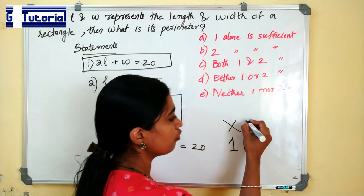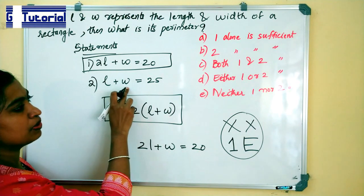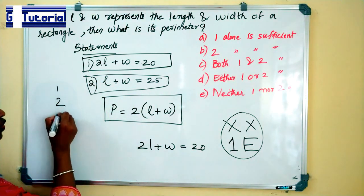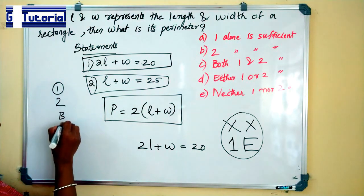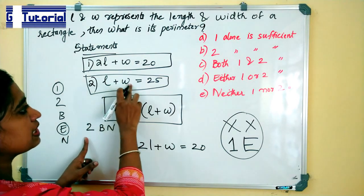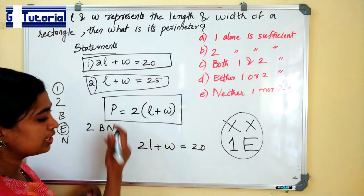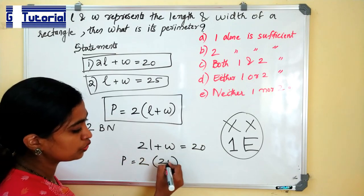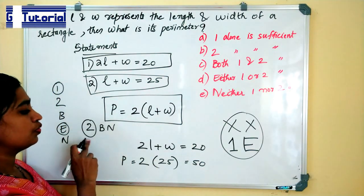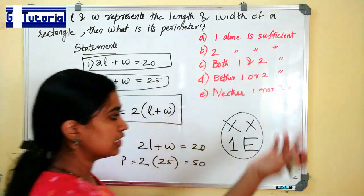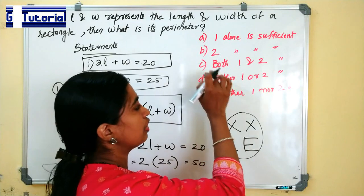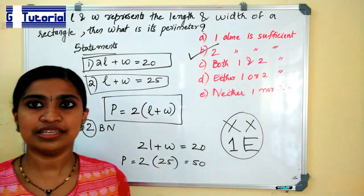So we have to go through the second statement: L plus W is equal to 25. The three possible remaining answers are two, both (B), and neither (N). Since L plus W is given as 25, perimeter equals 2 into (L plus W) = 2 into 25 = 50. So the second statement can give the answer for perimeter. Two alone can give the answer. Since either option failed earlier, either one or two will not come. So the answer is: two alone is sufficient to answer the given question.